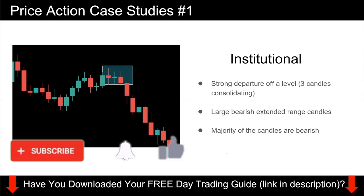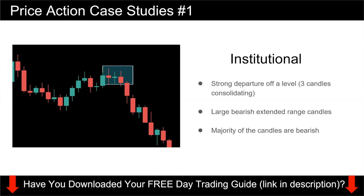The answer is that this is institutional selling. Let me break it down. You can see there's a strong departure of the level — price departed quite nicely and you have only about three candles consolidating before price took off. You also have large bearish extended range candles — this candle closes near the bottom, this one closes near the bottom, and this one too. In this entire move down, the majority of candles are bearish, with only one or two very small bullish candles. So this is institutional selling.